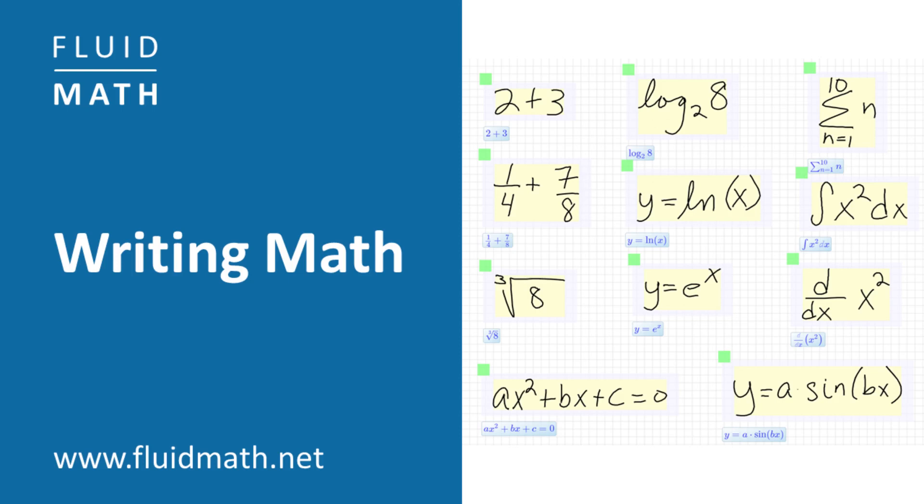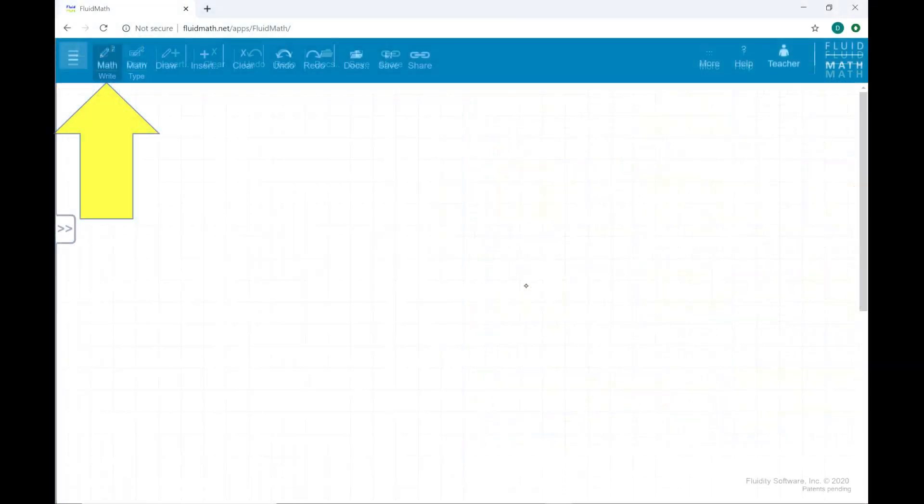Fluid math recognizes handwritten mathematics notation. To get started, make sure you have math handwriting mode enabled by clicking the appropriate math menu item. Click the math right menu item. This will enable math handwriting recognition.